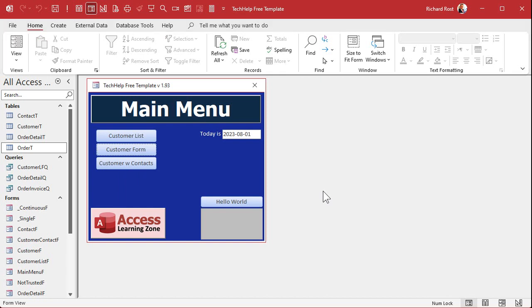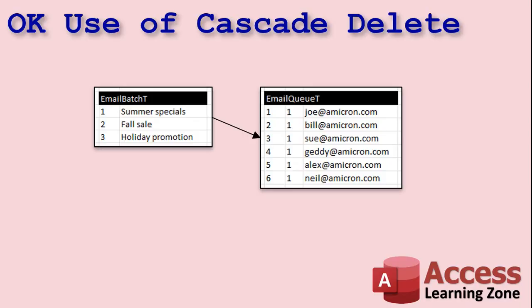You have to be very careful when you use cascade deletes. Are there instances where I will use them? Yes — but usually only when the data is going to be temporary. For example, in my database I have an email batch table and an email queue. I'll do promotions like summer specials or a holiday promotion, and I'll queue up emails assigned to a batch number. After a couple of months I don't need to keep that information around. So in that case I'll enforce cascade deletes — if I delete the batch, it deletes all the emails in the batch. That's just housekeeping, because it's not information I need to save.